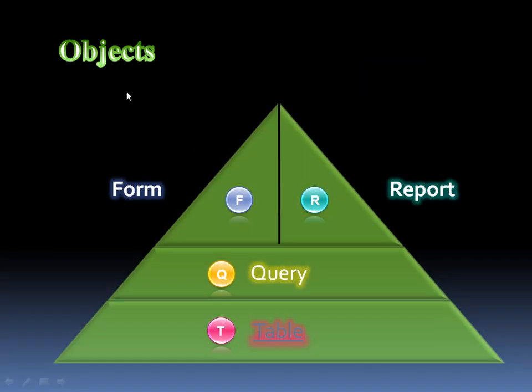Now Access has what are called objects, and as we just learned, the foundation of all the objects are tables — because without a table of data, you don't have a database. To store the data, we create a table and break the data down into its smallest, most meaningful parts. For example, we had a table all based on employees. We keep track of all our employees in one table, and all the clients — their first name, last name, address, shipping address — in another table.